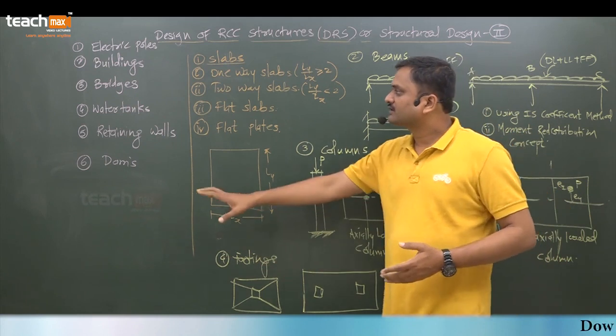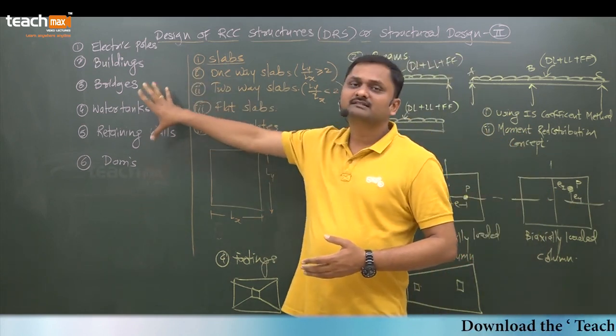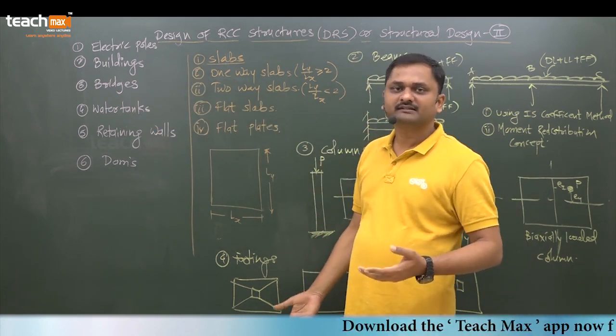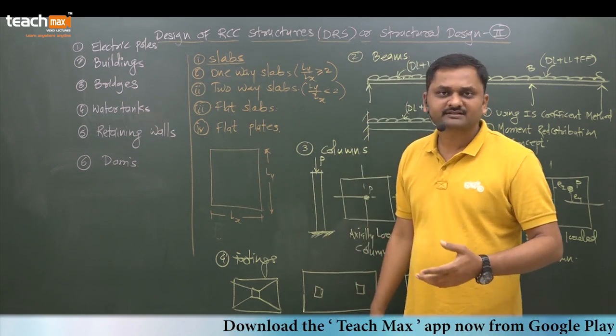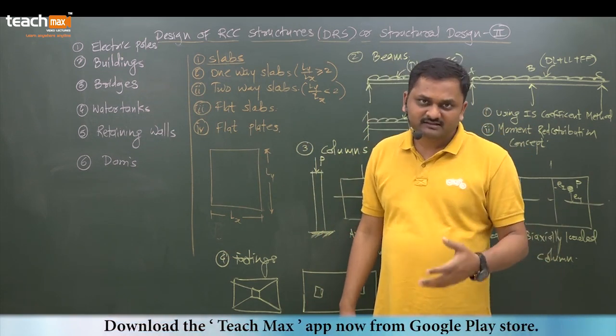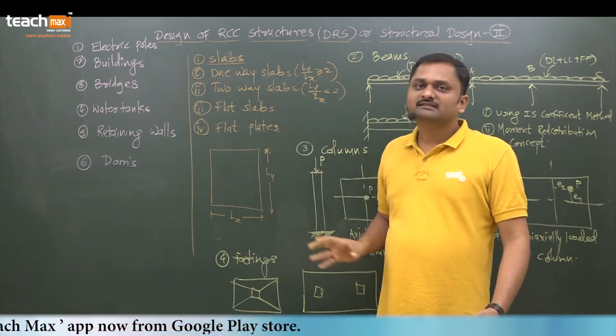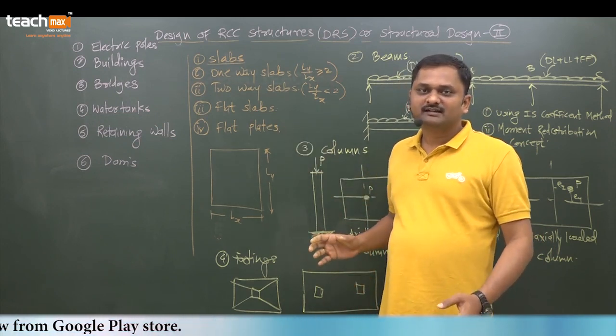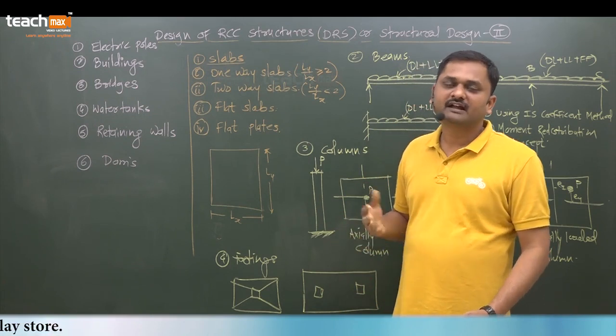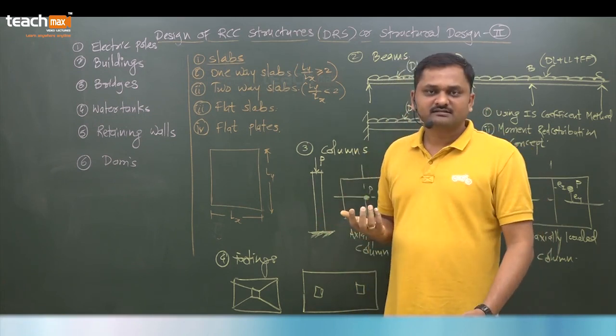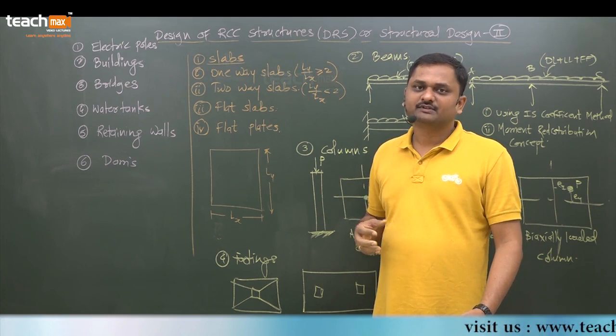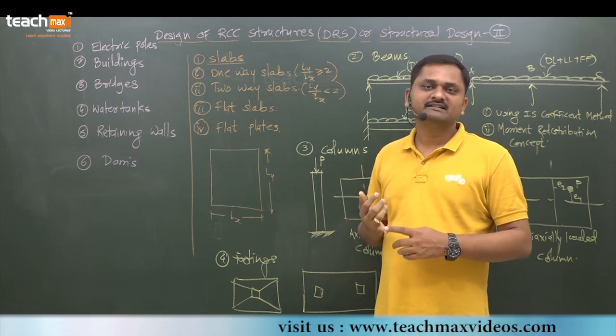In this subject, these RCC structures are indirectly made up by a number of structural elements. These structural elements we can design. Idealization is done. Slabs are there - floors and roofs are generally called as slabs. We can design the slabs.